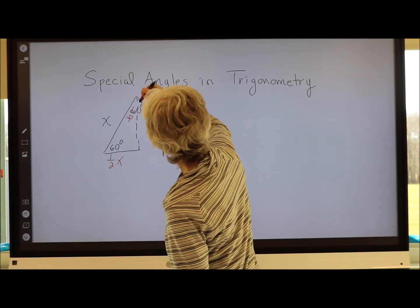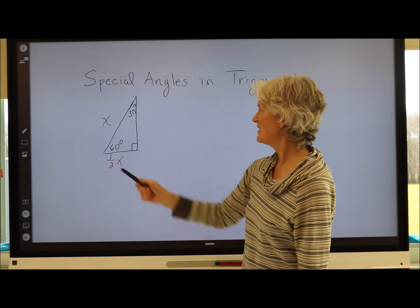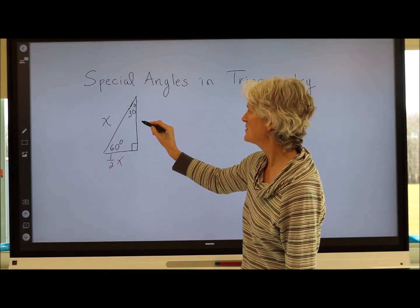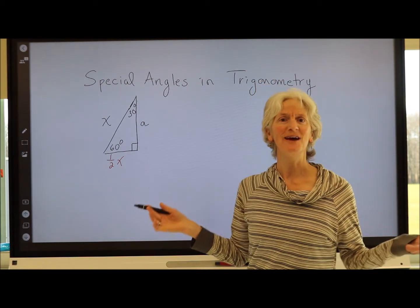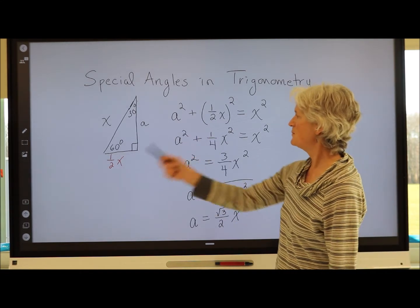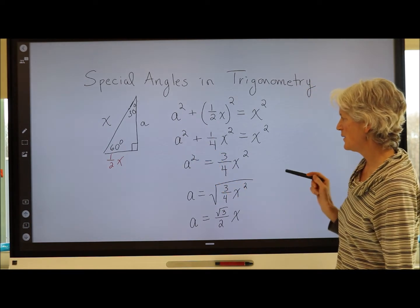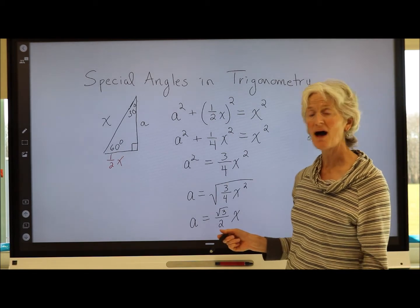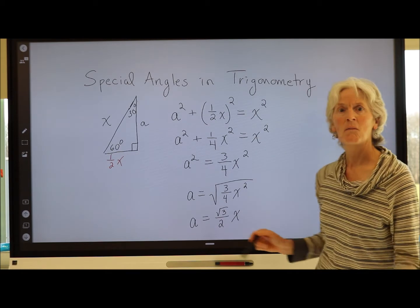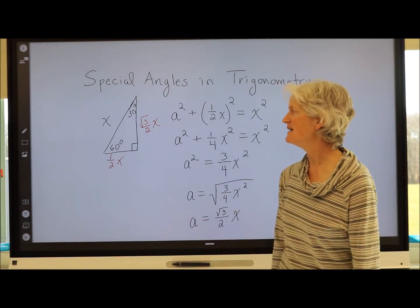So in this 30-60-90 triangle, the hypotenuse is x and the side opposite the 30° is x/2. Let's call the remaining side a and use the Pythagorean theorem to find it. Isolating a², taking the square root of both sides, we get a = (√3/2)x. So now I have a relationship that works for any and every 30-60-90 triangle.